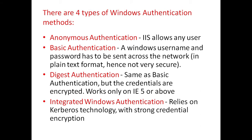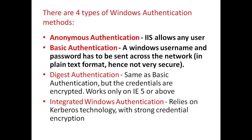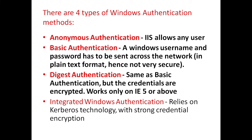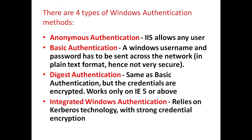There are four types of Windows authentication methods. Anonymous authentication, where IIS allows any user. Basic authentication, where the Windows username and password are sent across the network in plain text format, hence they are not very secure. Digest authentication, which is similar to basic authentication but the credentials are encrypted, and it works only on Internet Explorer 5 or above. And integrated Windows authentication, which relies on Kerberos technology with strong credential encryption.